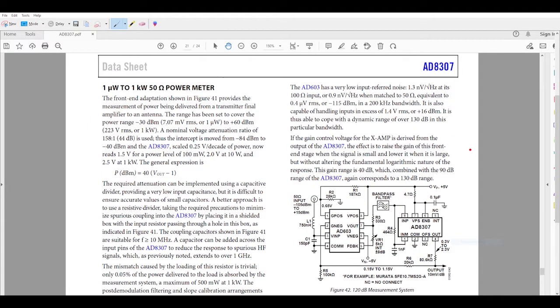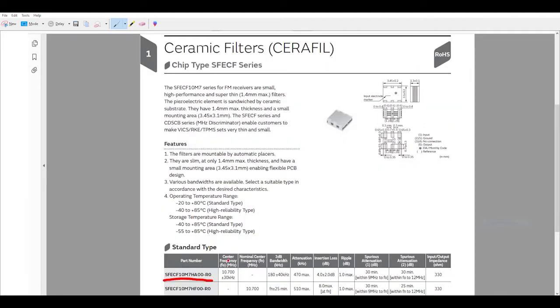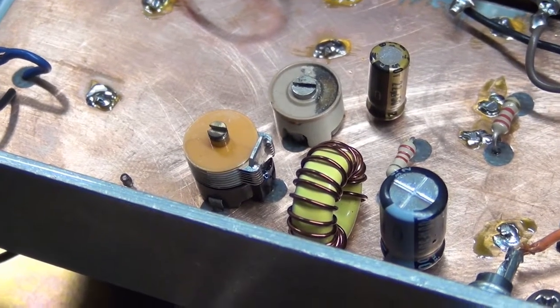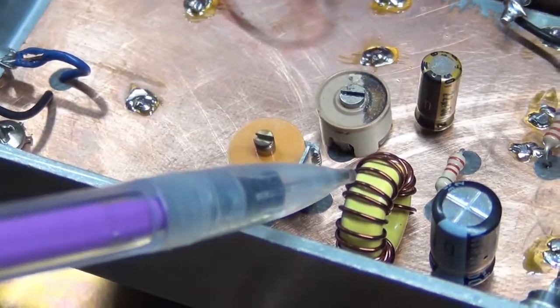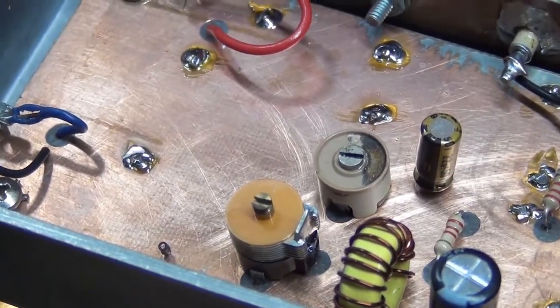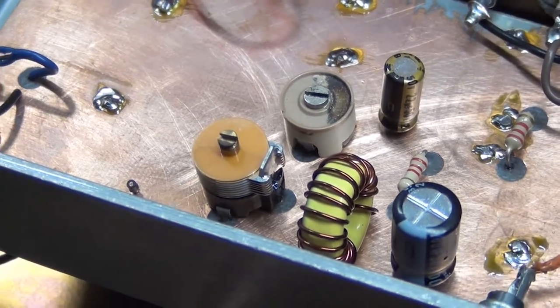Since I was already tearing everything up, another change I decided to incorporate was to use AD's reference design for the bandpass filter between the two chips. They show a Murata ceramic 10.7 MHz bandpass filter between them. I did some searching and found that that part is obsolete, but Murata makes a modern surface mount version that's very similar to the one shown in the reference guide, and it's super tiny, it's less than 4mm square.